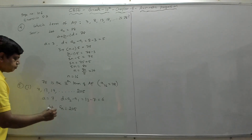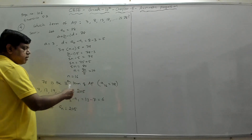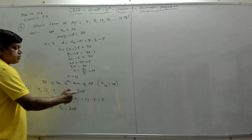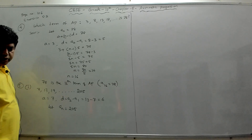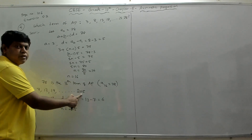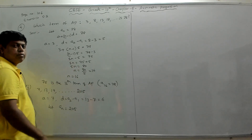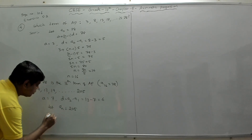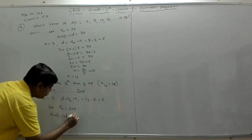Finding n gives the total number of terms — if 205 is the 10th term, there are 10 terms; if it's the 20th term, there are 20 terms. So: an = a + (n−1) × d = 205.